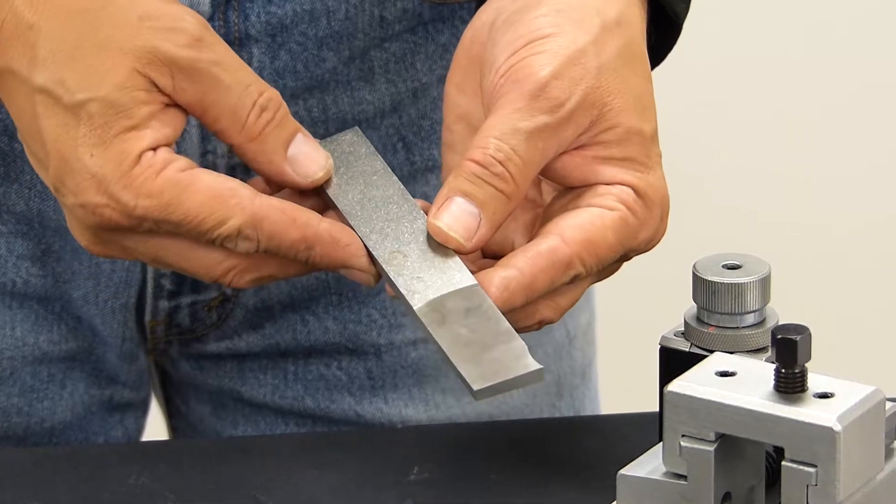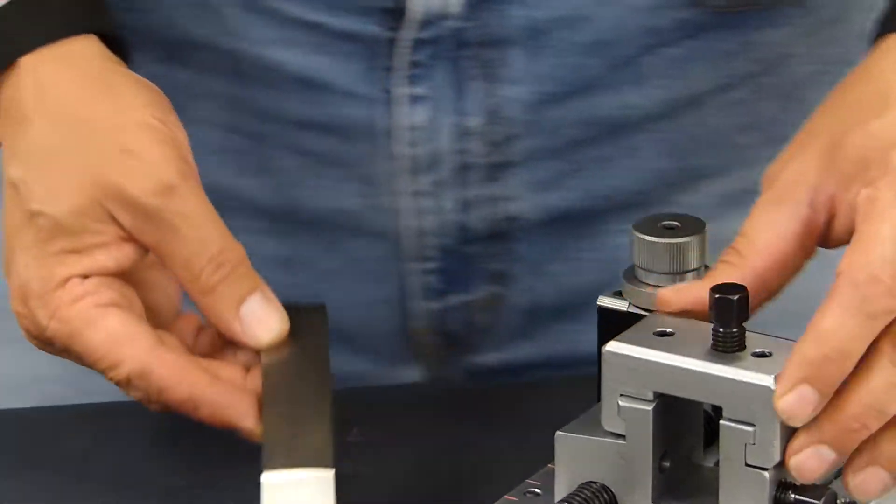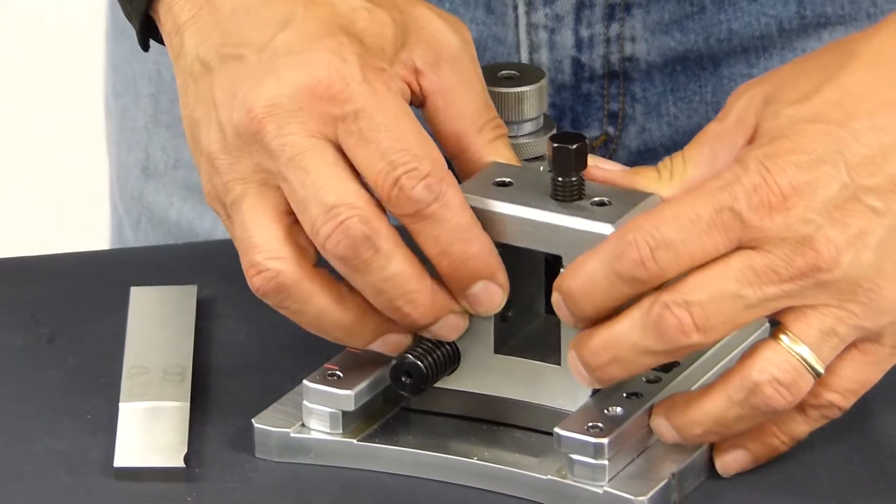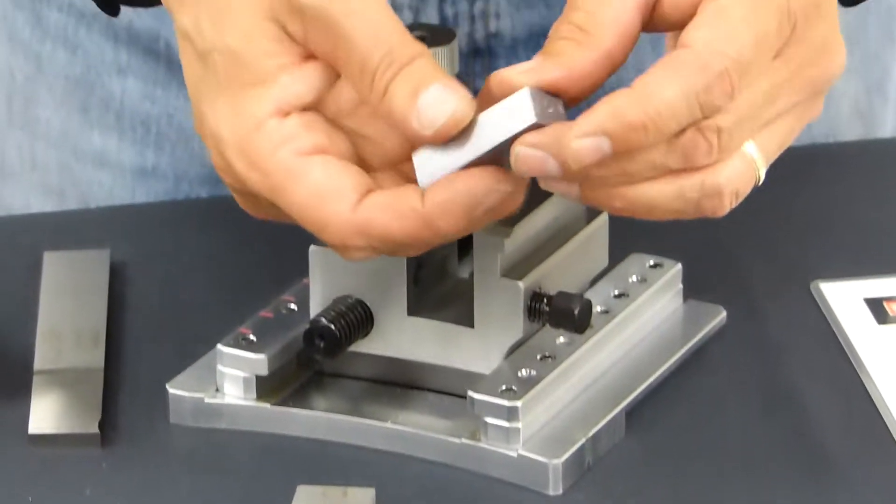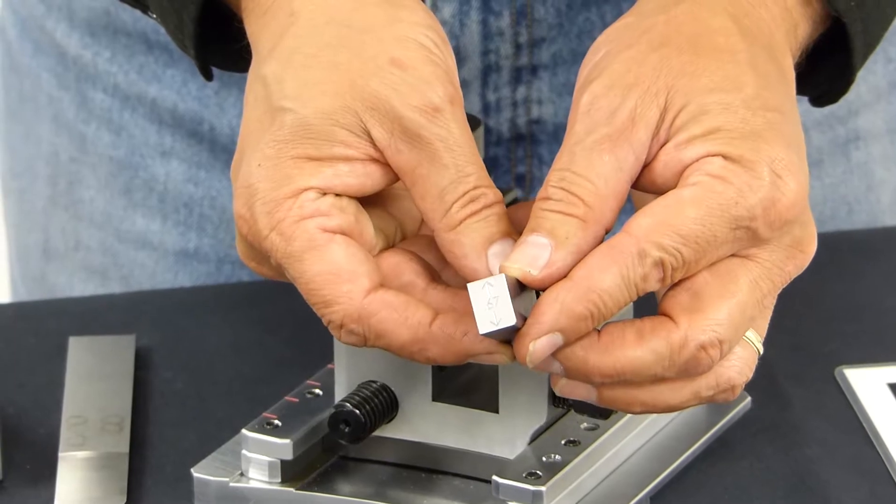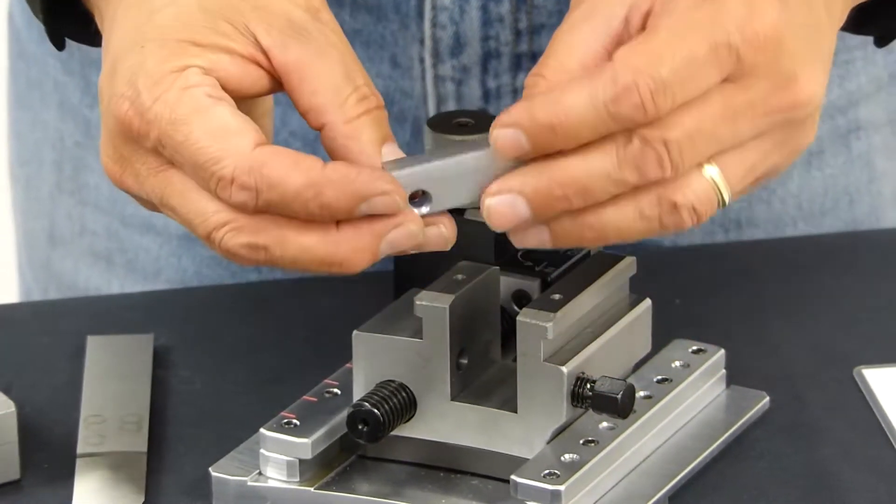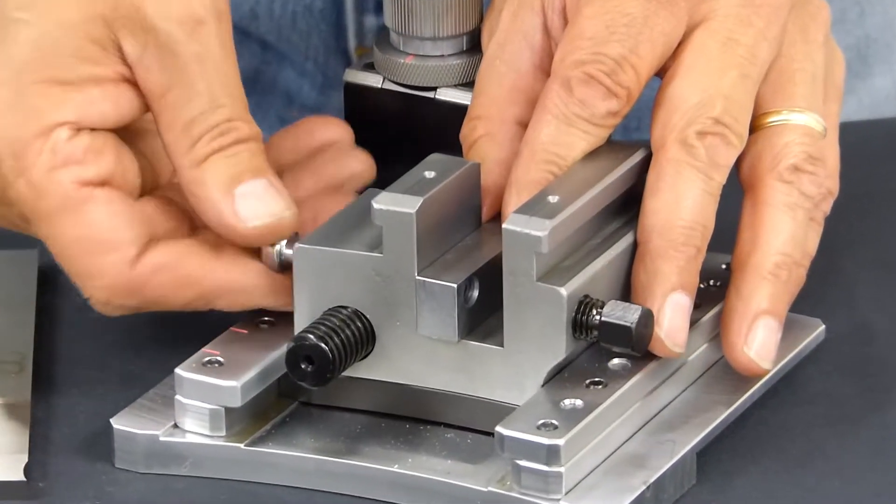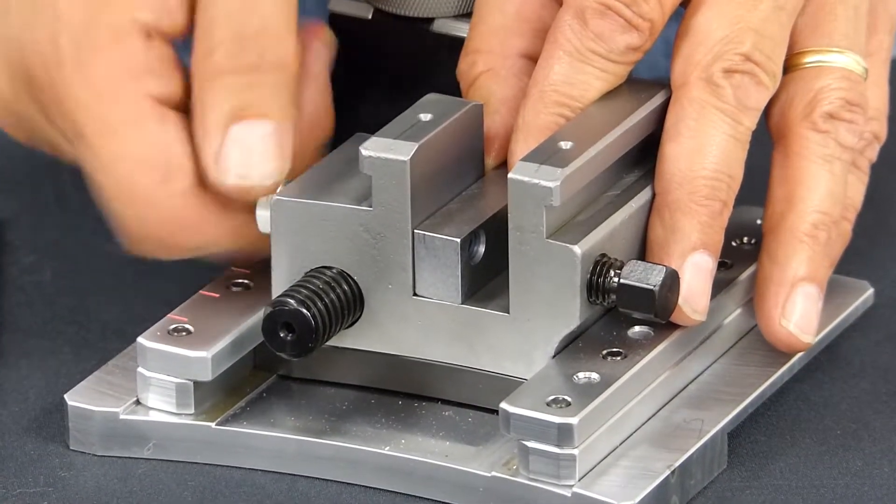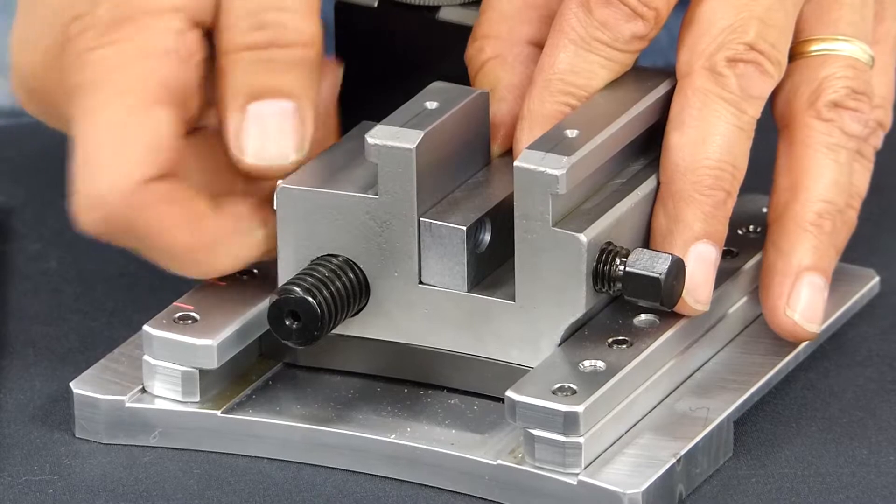Now we'll place our parting blade in our second slide. For this, we're going to remove the cover. And then we will be using the shorter of the two spacers, the 670. Place that into the slide. Secure it down with the locking screw.